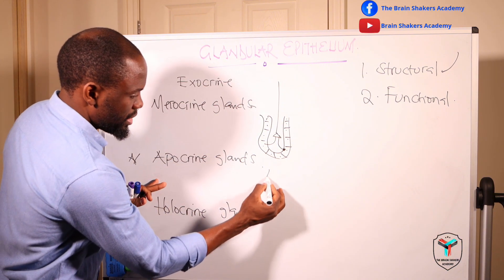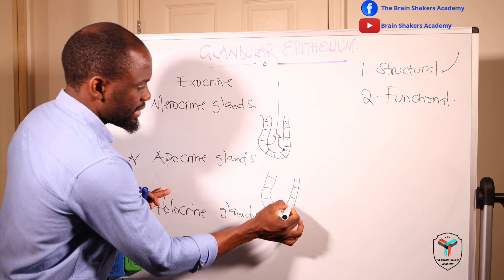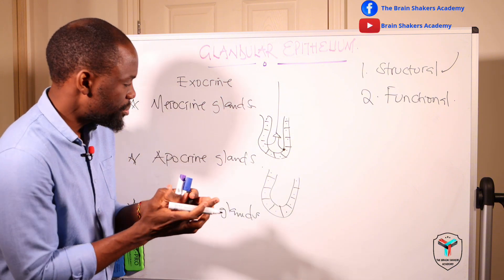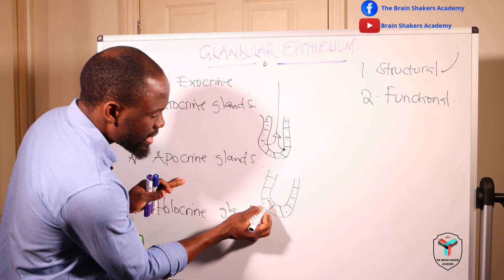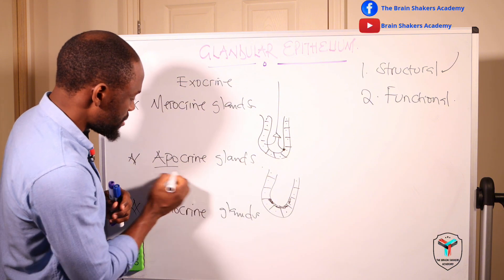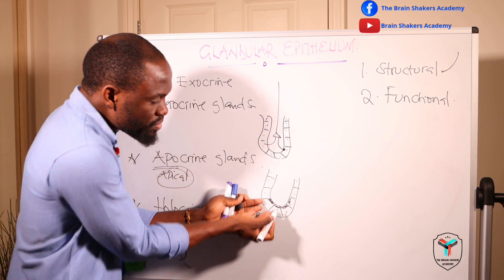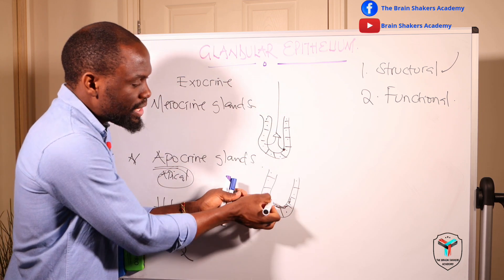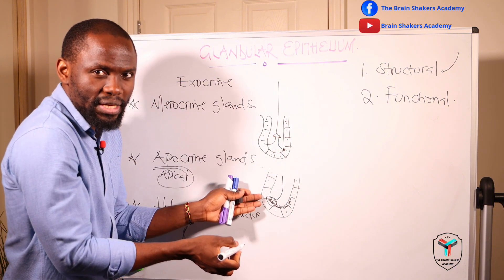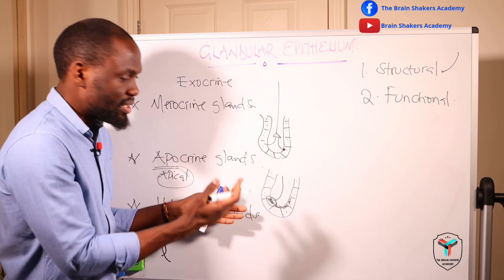For apocrine glands, the cells lining the gland produce their secretory product, which then moves towards the apex of the cell — that is why it is called apocrine, from 'apical.' The secretory product accumulates at the apical portion of the cell, then pinches off and is released into the duct to travel to the epithelial lining. The remaining cell then repairs itself and repeats the process.